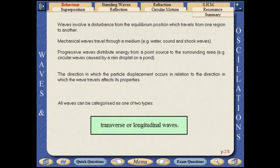Waves involve a disturbance from the equilibrium position which travels from one region to another. Mechanical waves, such as water, sound, and shock waves, travel through a medium. Progressive waves distribute energy from a point source to the surrounding area, for example, circular waves caused by a rain droplet on a pond.